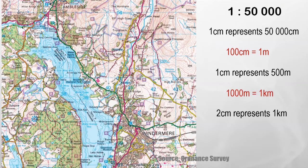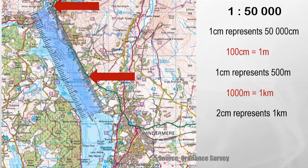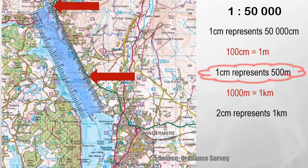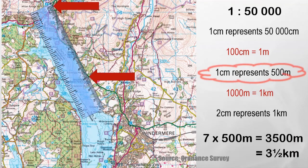Let's find the distance between Ambleside and the National Park Centre in a straight line using a ruler. That's seven centimetres. Using the scale where one centimetre represents 500 metres, seven centimetres represents 3500 metres, which divided by 1000 is three and a half kilometres. So from Ambleside to the National Park Centre is three and a half kilometres.